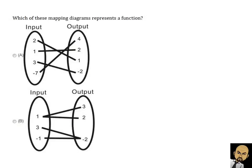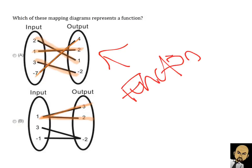Let's take a look at another example. Which mapping diagram represents a function? Each input value must only be paired with one output. In example A, the two is paired with one, the input one is paired with two, three is paired with negative two, and negative seven is paired with four — that looks like a function. But in example B, the input one is paired with two outputs. Because of that, B is not a function. So mapping diagram A is the function.